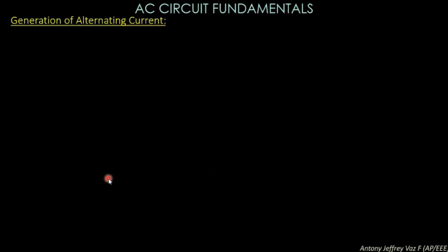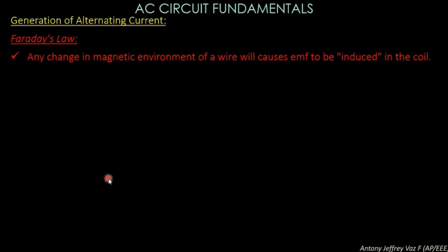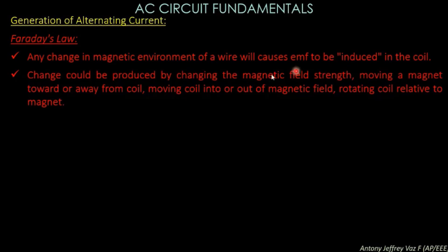In AC circuit fundamentals, we will be seeing about Faraday's law, which is the very basic law for the generation of AC voltage. You all know Faraday's law: any change in magnetic environment of a wire will cause an EMF to be induced in the coil. This change could be produced by changing the magnetic field strength or moving a magnet towards or away from a coil.